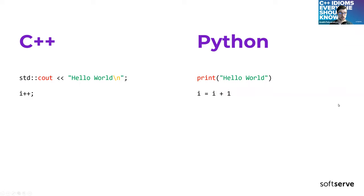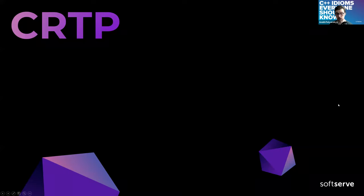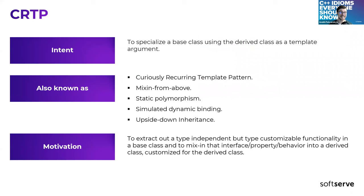Moving to the first item: CRTP. It stands for Curiously Recurring Template Pattern. The second most popular name is static polymorphism. The idea behind this idiom is to reduce the duplication in the derived classes by extracting all of it to the base class, while allowing the derived classes to customize the common implementation.